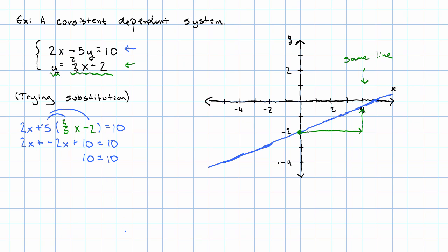In general, then, when we're solving a consistent dependent system algebraically, we'll end up with an equation that just says a number equals a number. That is, with no variables in it, and that equation will be true. That is, the two numbers will actually be the same.